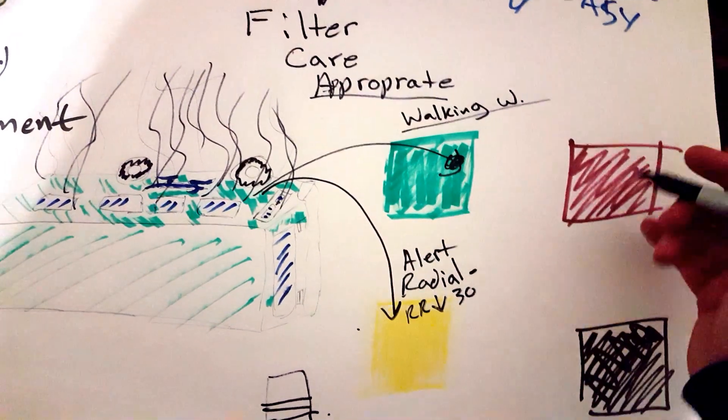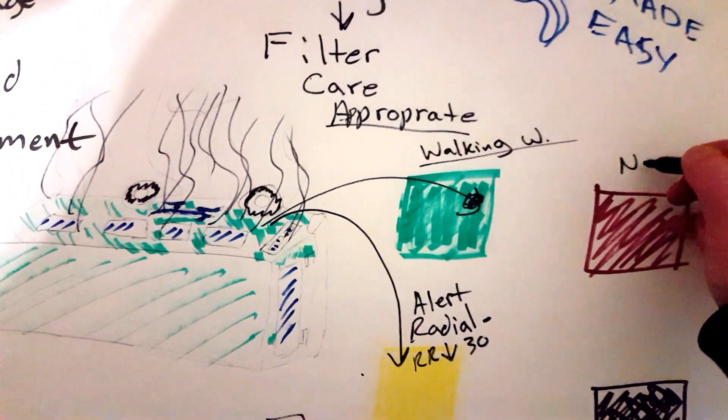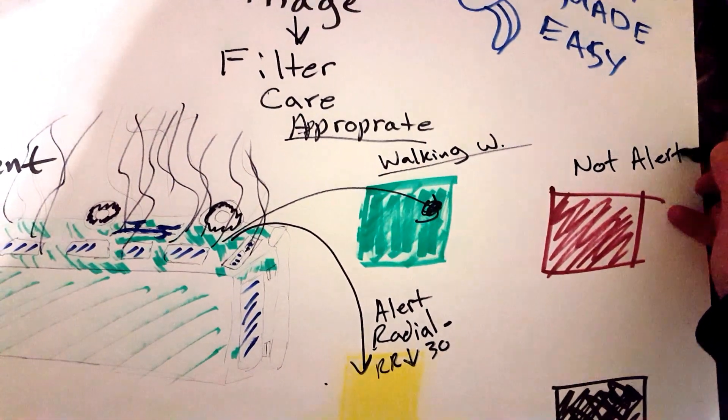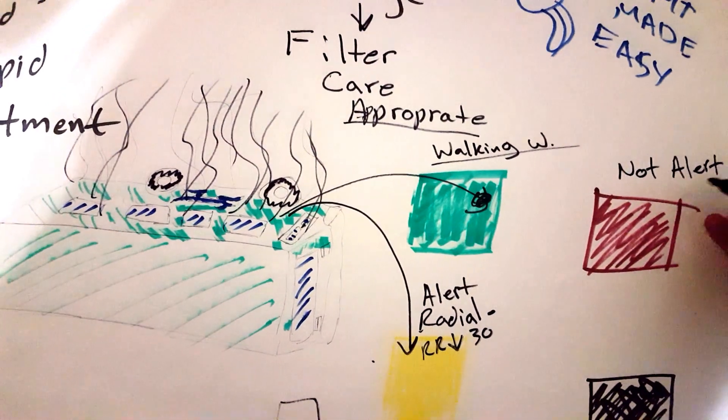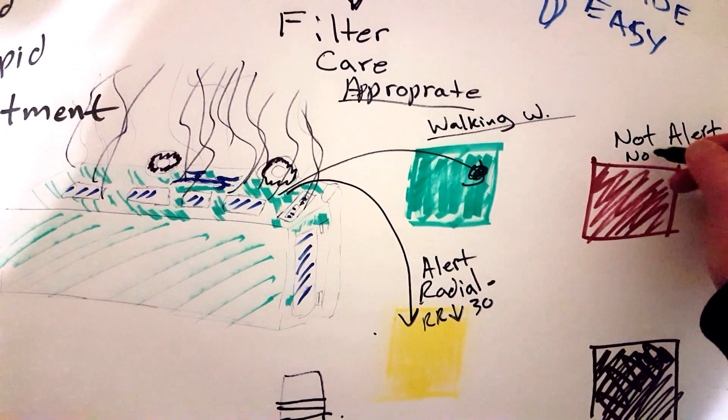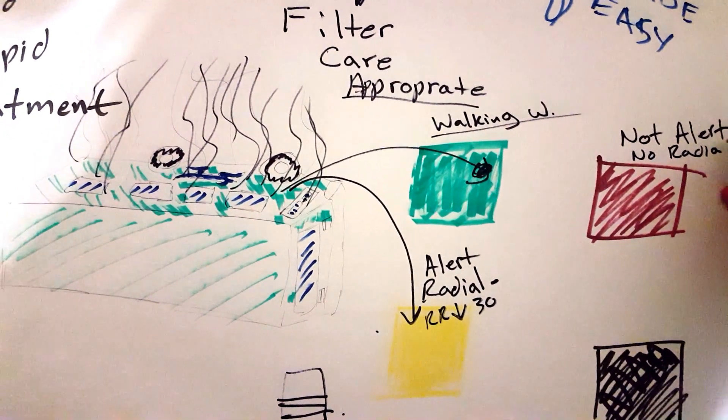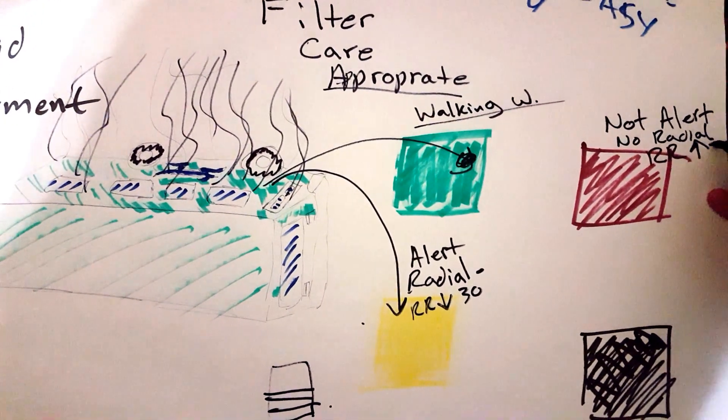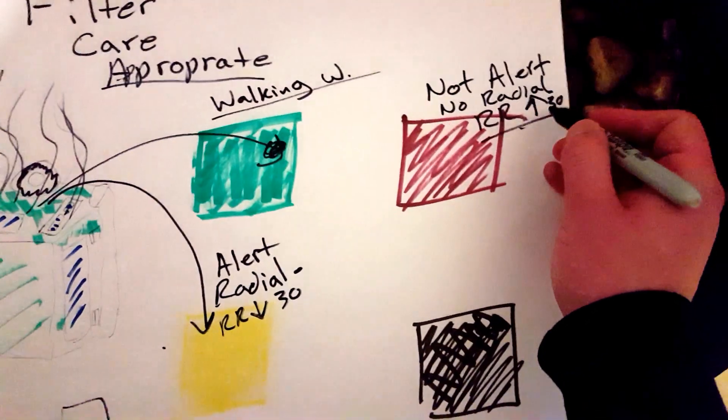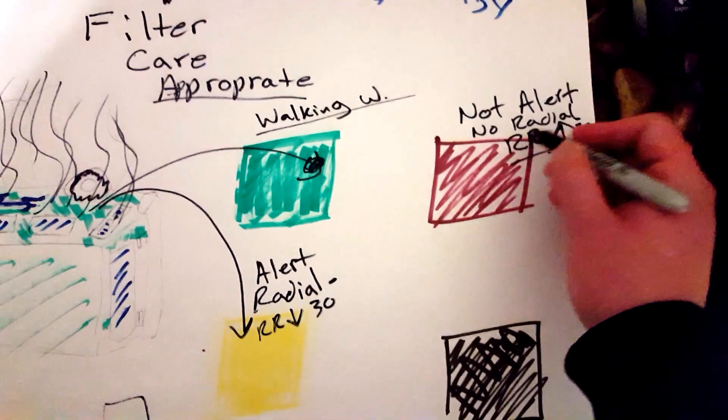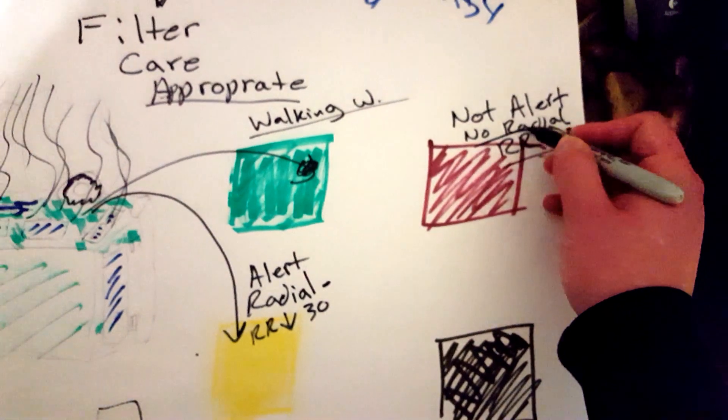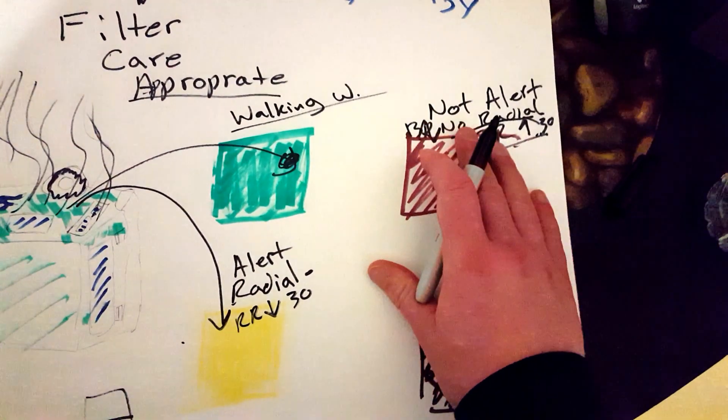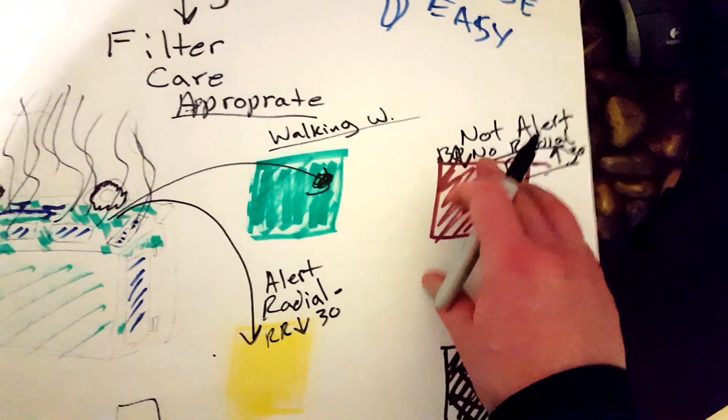The ones you find that are not alert, no radial pulse, and respiration rate is above 30. If it's above 30, that means that they're compensating. No radial pulse means blood pressure is decreasing. They will go in the red.